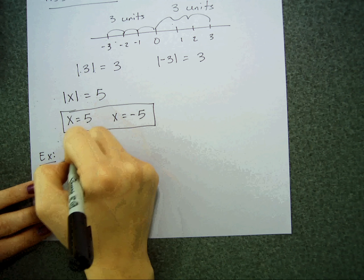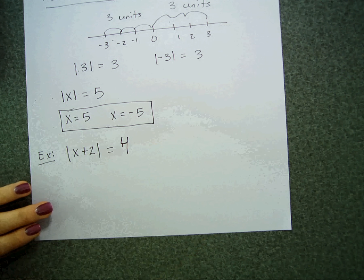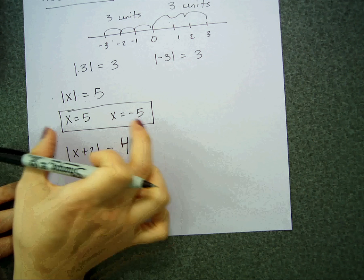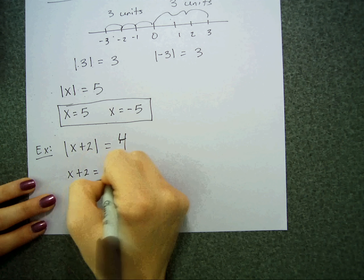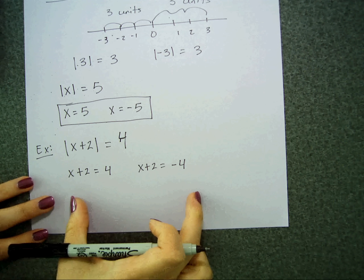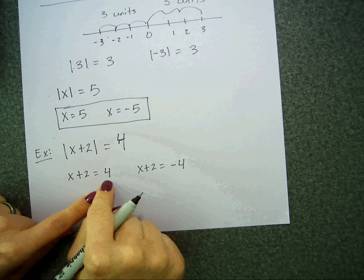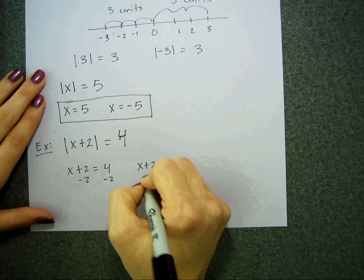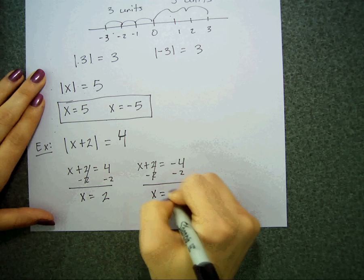So let's look at an example. Let's say I have the absolute value of x plus two is equal to four. Notice again, I have the absolute value by itself — there's nothing on the outside. So I can use this same concept. Whatever x plus two is, when I took the absolute value of it, it either equaled four, or before I took the absolute value, it equaled negative four. So I split it into two equations — the absolute value goes away, one remains the same, and one changes its sign. I subtract two from both sides on both equations, and I get x is equal to two and x is equal to negative six.